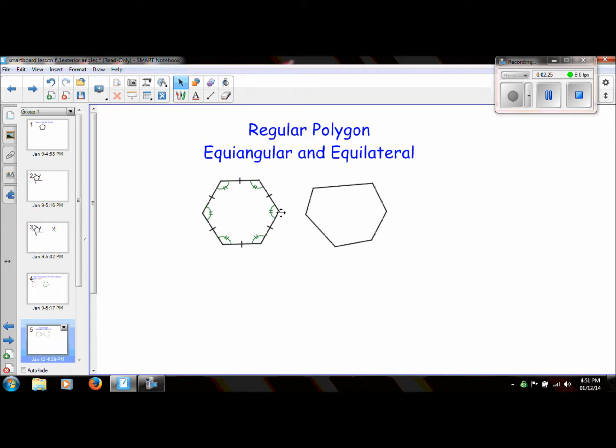So this is an example right here of a regular polygon. This is a hexagon, so this would be called a regular hexagon. And this one is not. And I showed this to you in the last video as well.